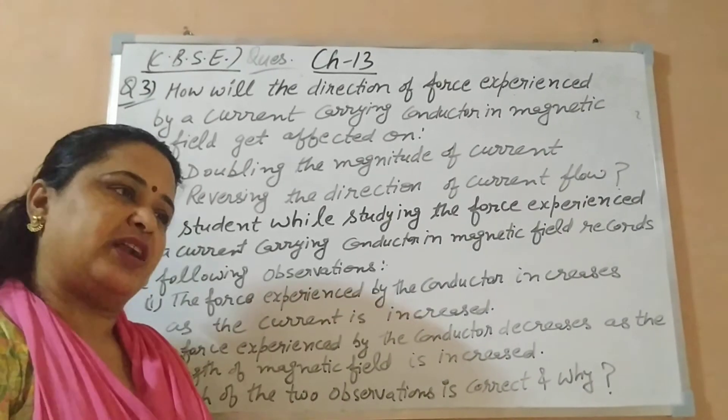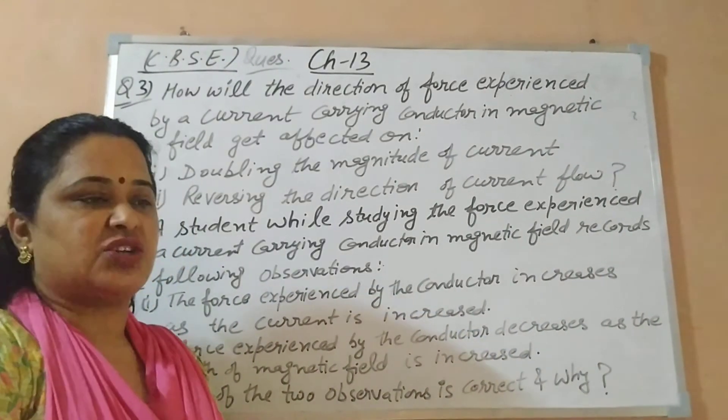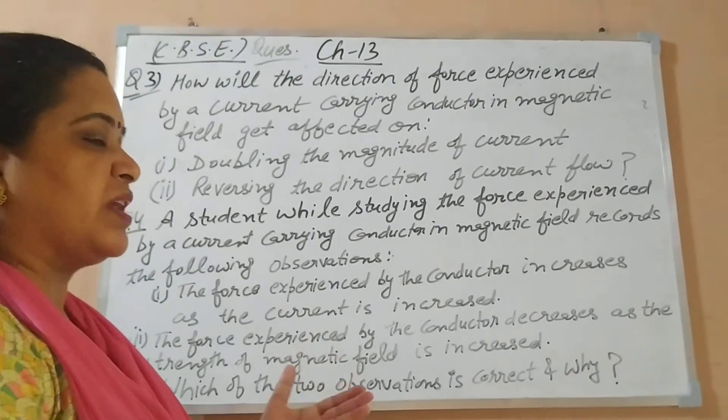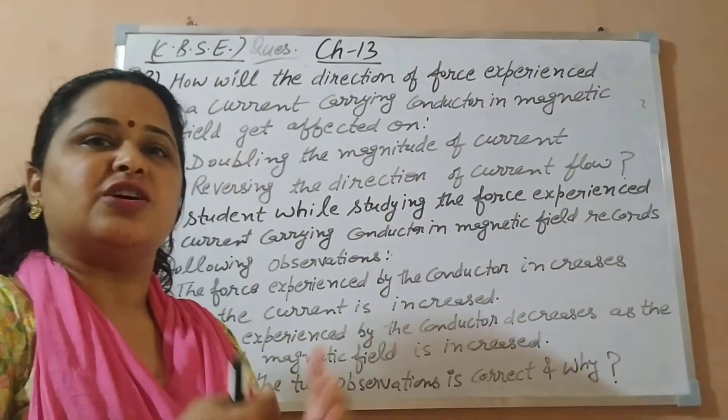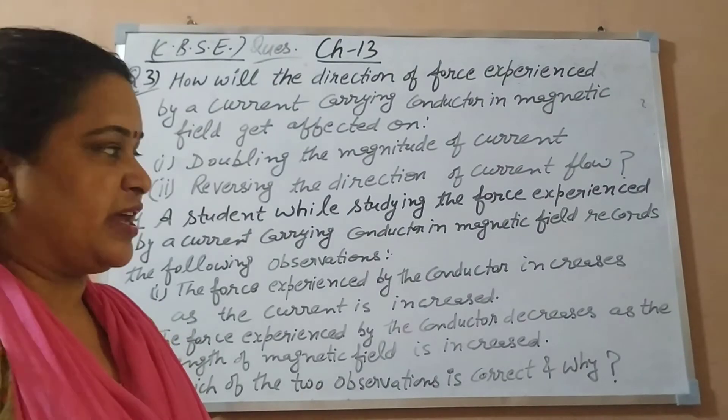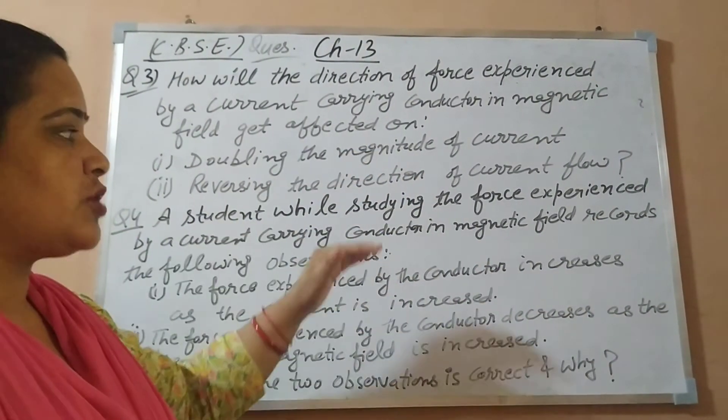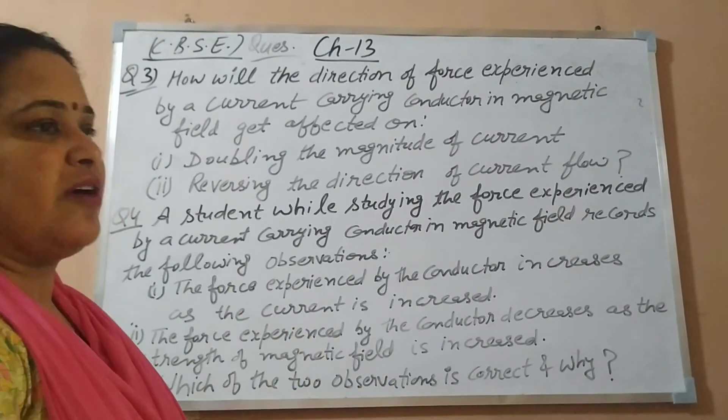Sometimes in CBSE, direct questions also used to come, like state and show that force is exerted on a current carrying conductor when it is placed in a magnetic field, and state the rule to find out that force direction. But not every time. Sometimes like this also they ask. So you have to use your mind.